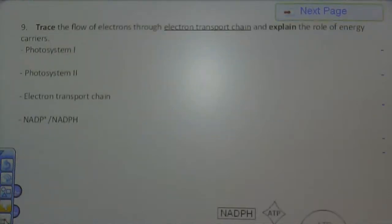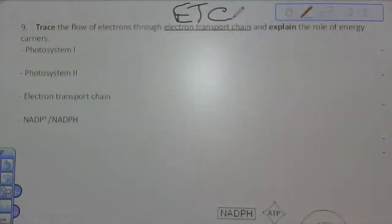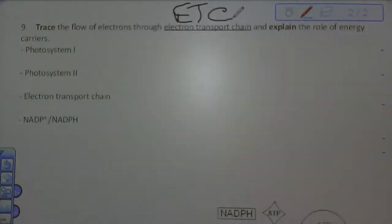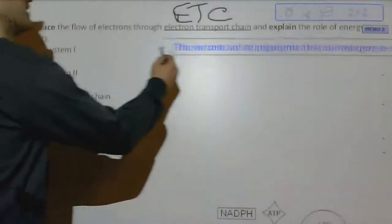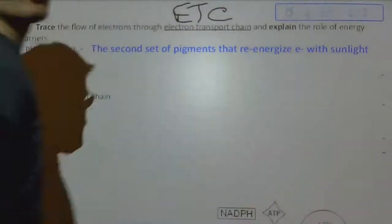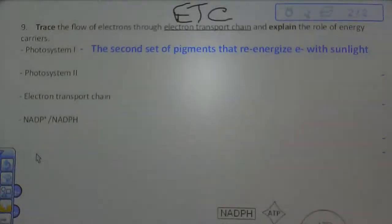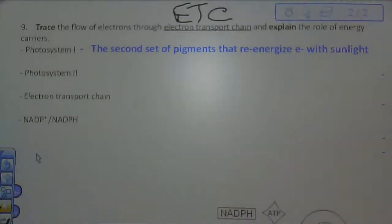Moving on to objective nine. We're going to look at the flow of electrons through the electron transport chain. We're going to abbreviate, and you should too, ETC. We'll talk about the energy carriers, energy slash electron carriers. Photosystem one was actually discovered first, but it actually kind of happens second in the process. It is the second set of specialized proteins called pigments that re-energize electrons with sunlight. You'll see where that comes into play when we get to the light reactions further down.